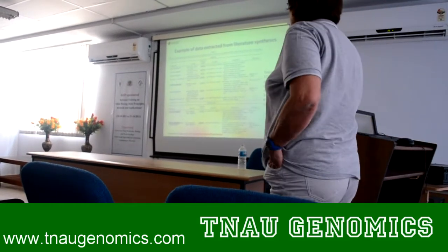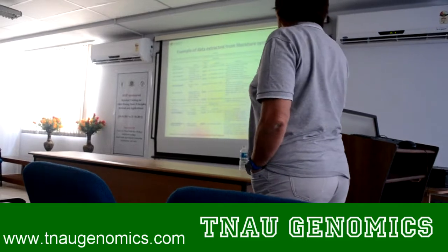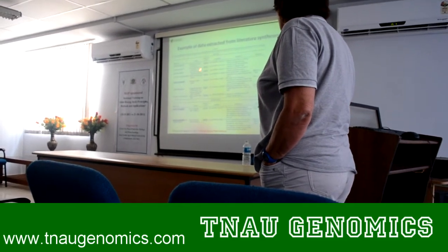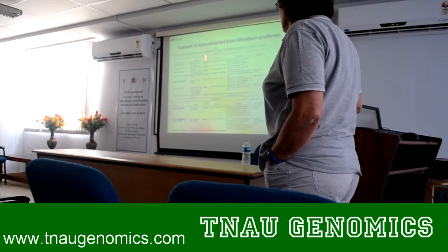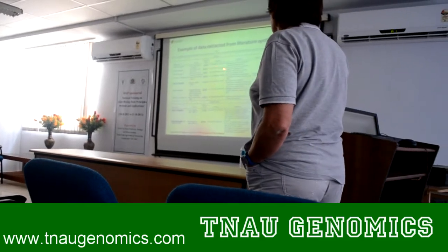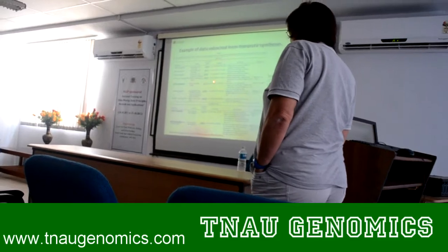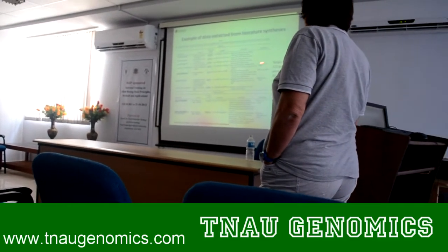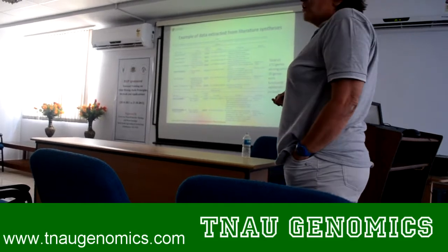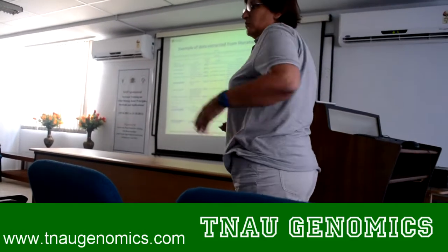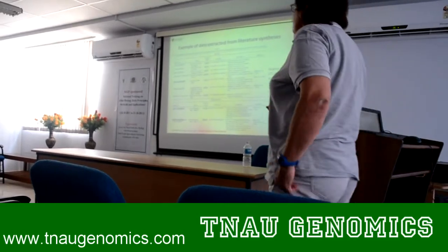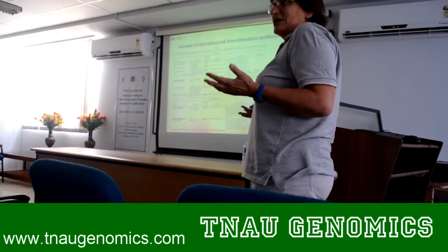Here is an example of data extracted from a literature synthesis. You have a list of genes, a list of loci, the protein in the Uniprot database, the position on the rice genome — on which chromosome — and the description of the role of the gene along with the reference. There are a total of 172 genes in this paper, so you can see that the number of genes contributing to a trait can be large, and you need to find ways to reduce this number.